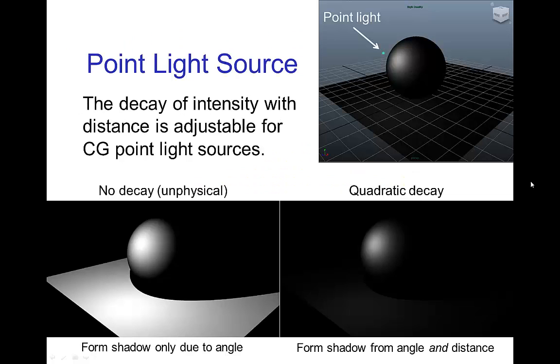Here we see some examples from Maya where we set up a point light from a sphere. In the rendered image on the left, this is when we have no decay of the intensity with distance, so the form shadow is entirely due to angle.